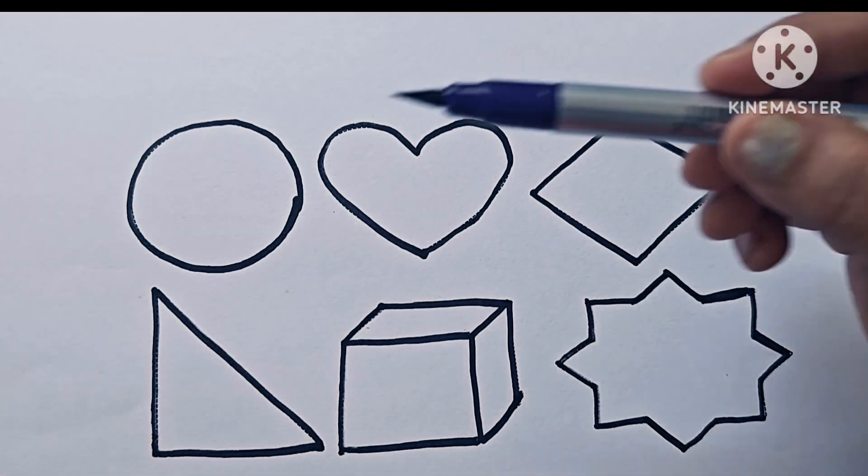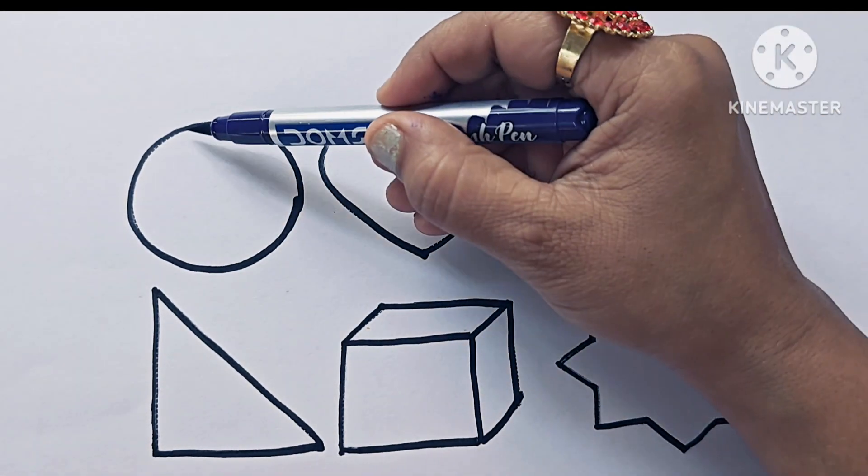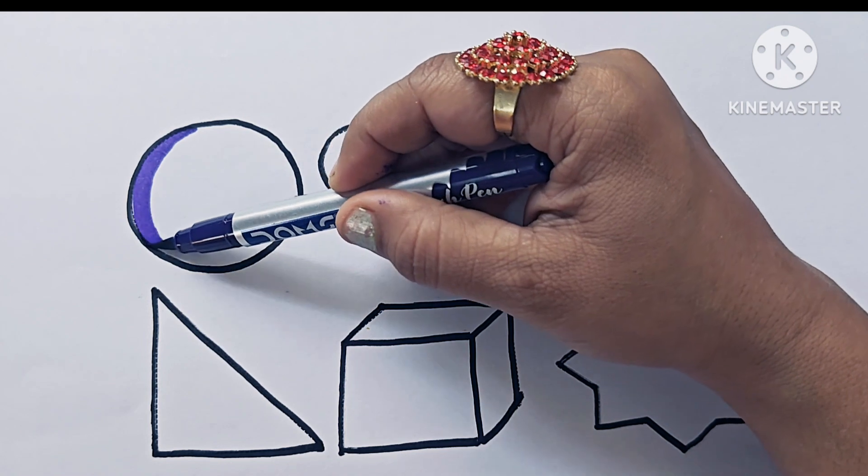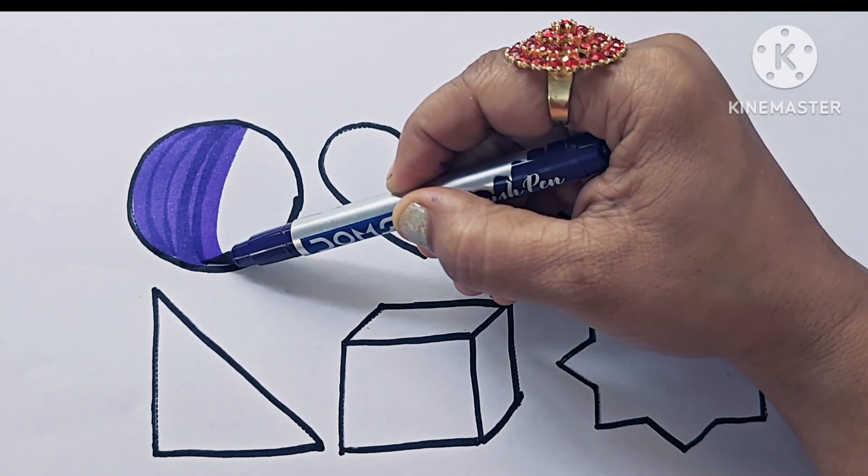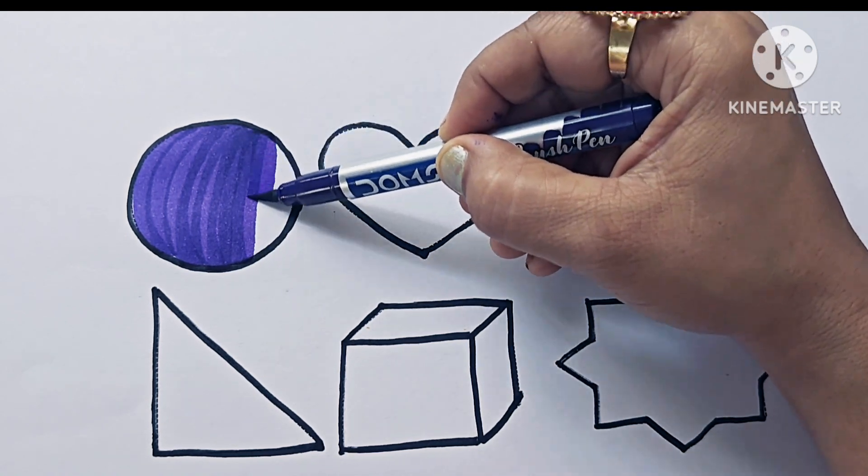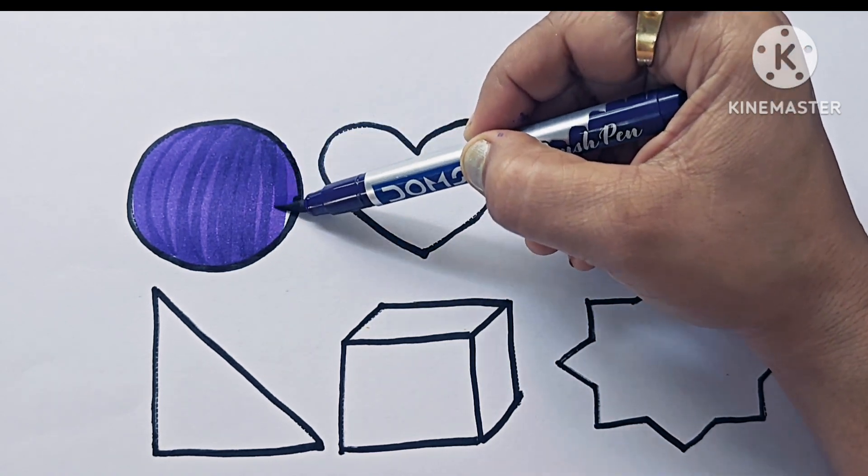Let us color these shapes. This is purple color. This shape is circle. Circle has no sides. It is made of a curved line.